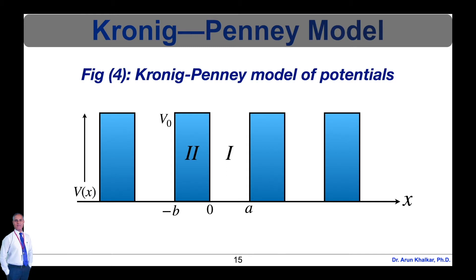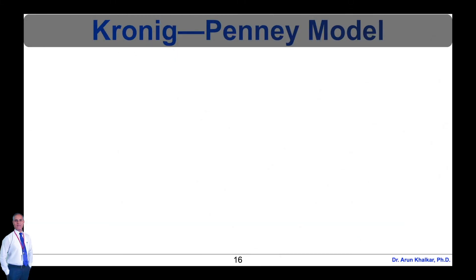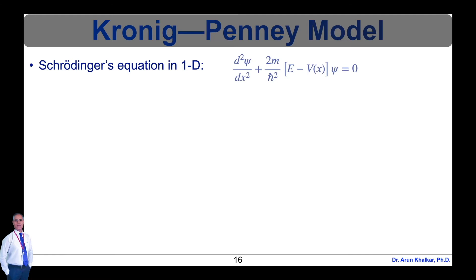This model is called the Kronig-Penney model of potentials. In order to find the allowed energies of electrons in solids, we have to apply Schrödinger's wave equation for an electron in a crystal lattice. By solving this Schrödinger's wave equation using the Bloch theorem, we get energy E versus momentum k as shown in this diagram. Schrödinger's time-independent wave equation for the motion of an electron along the x-direction is given by: d²ψ/dx² + (2m/ℏ²)(E − V(x))ψ = 0. Let this be equation number 1.